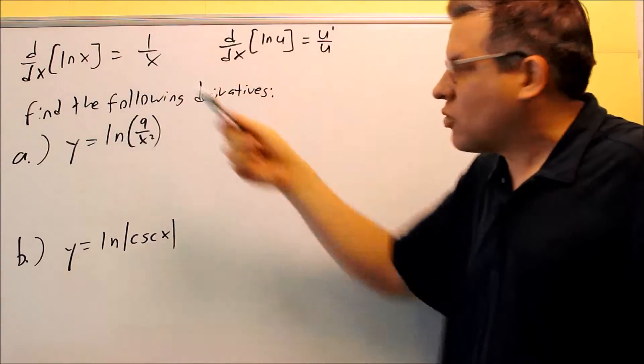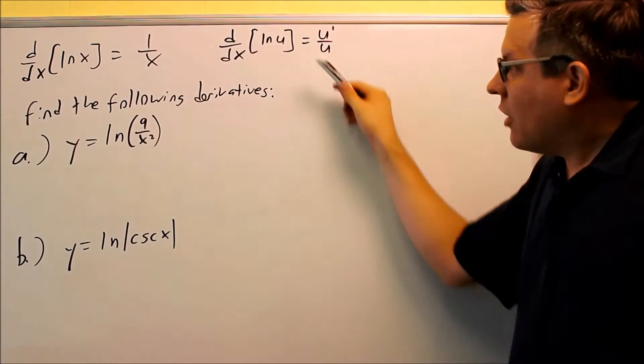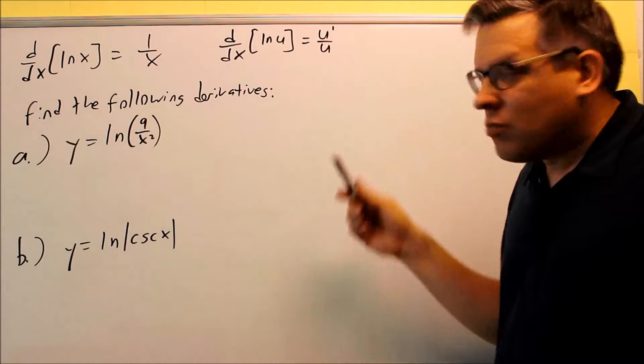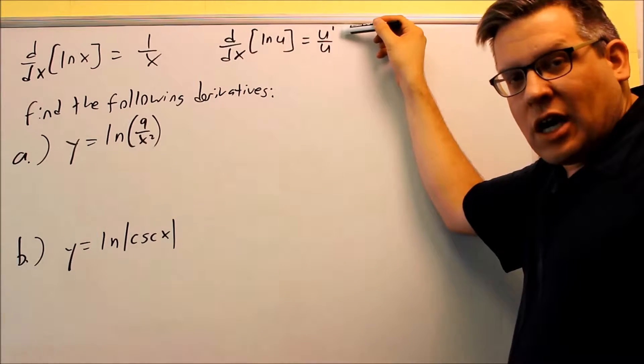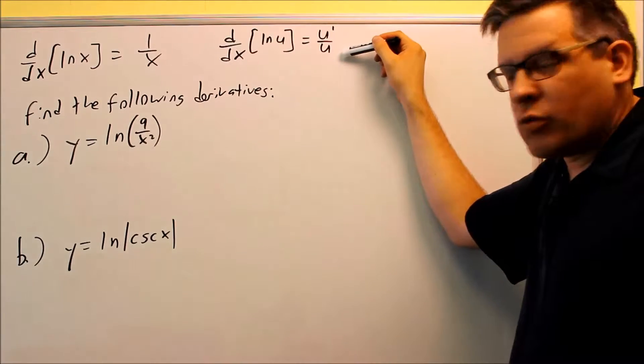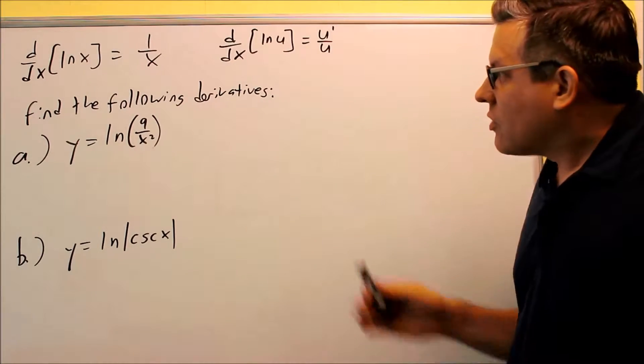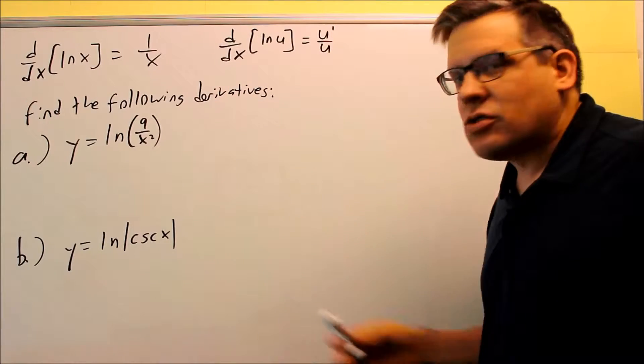So natural log of x is just 1 over x, and then if you have a u inside, you're applying a chain rule. What you do is you take the derivative of the inside on top, and then just divide it by what was originally inside. So u prime over u is the formula. Now that we've looked at these, let's do these two examples.